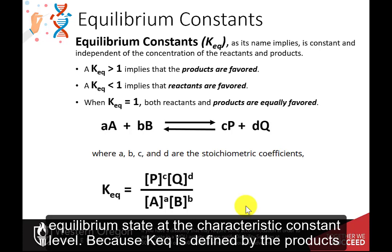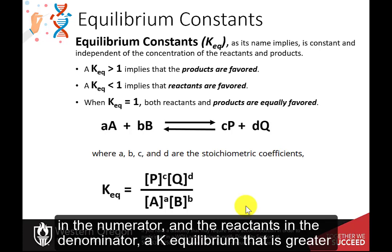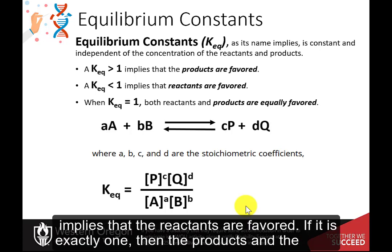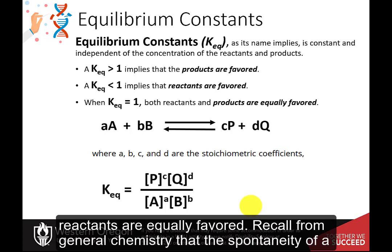Because K-EQ is defined by the products in the numerator and the reactants in the denominator, a K-Equilibrium greater than 1 indicates that the products are favored, whereas a K-Equilibrium less than 1 implies that the reactants are favored. If it is exactly 1, then the products and the reactants are equally favored.